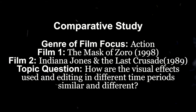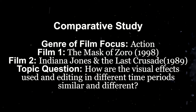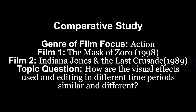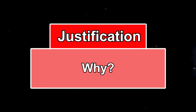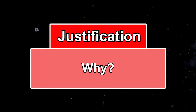I will be exploring the genre of film-focused action through The Mask of Zorro, directed by Martin Campbell, and Indiana Jones and The Last Crusade, directed by Steven Spielberg. My question for these films is how the visual effects used in the editing process and the editing in general differ between the two time periods, as well as how they are similar.